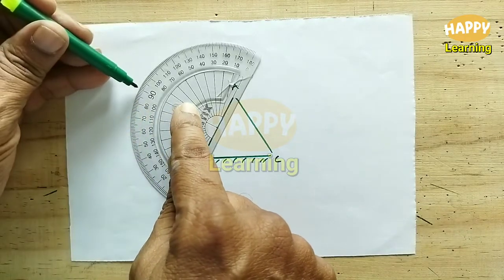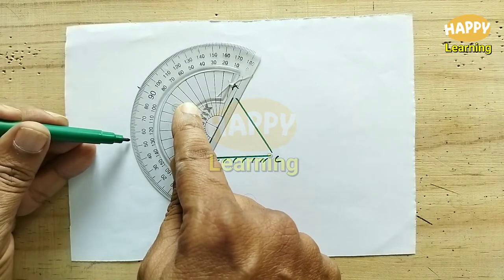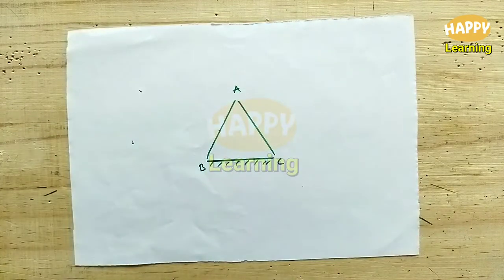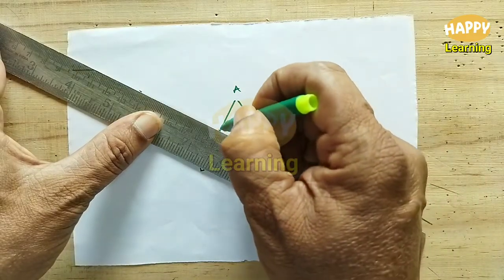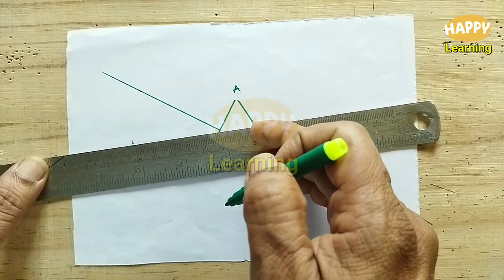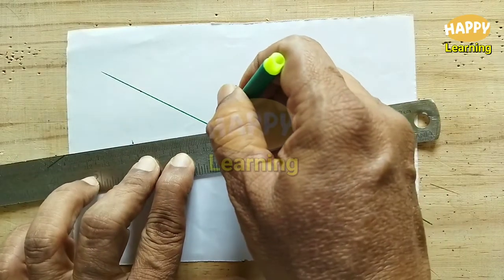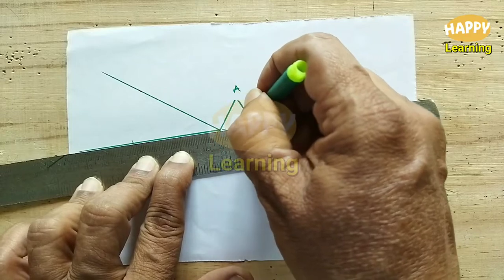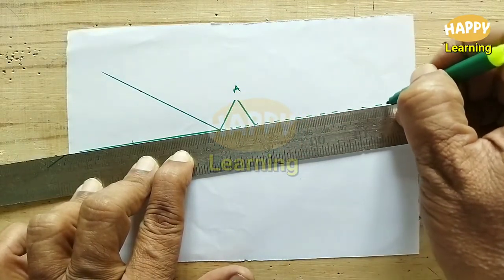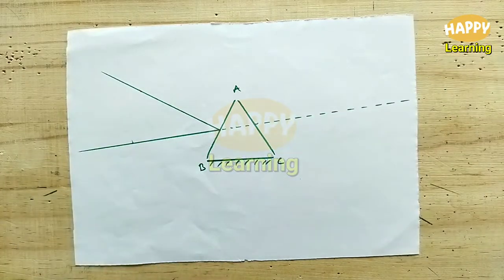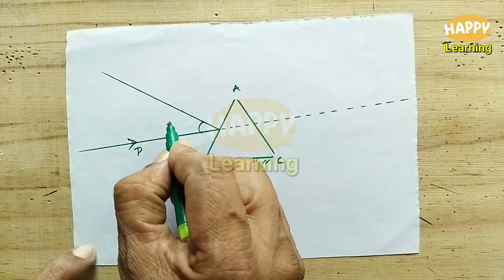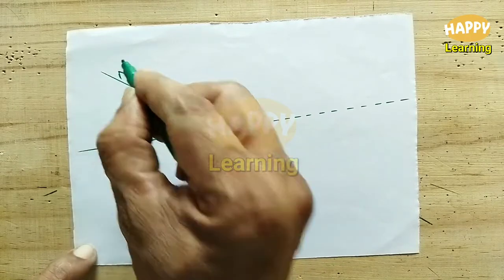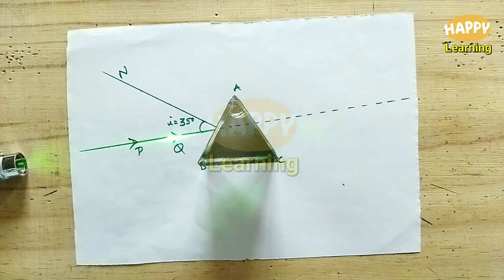Using the protractor, note down the position of the normal and the incident ray. Here I am taking 35 degrees as the angle of incidence. Draw the normal to the surface AB — this will be the normal. Draw the incident ray making an angle of 35 degrees. Extend the incident ray with a dotted line. The angle of incidence i equals 35 degrees.